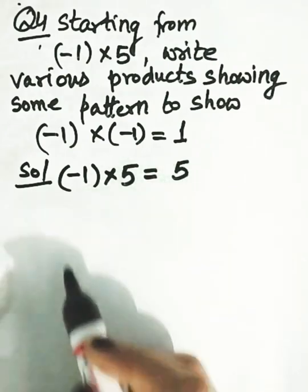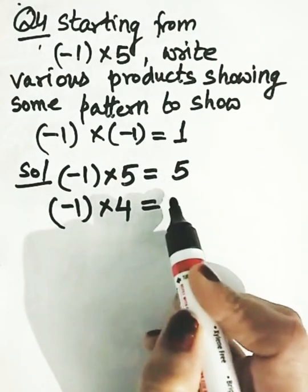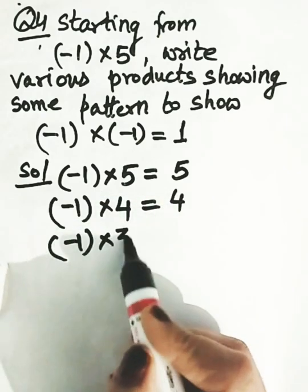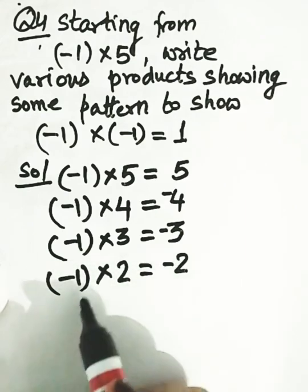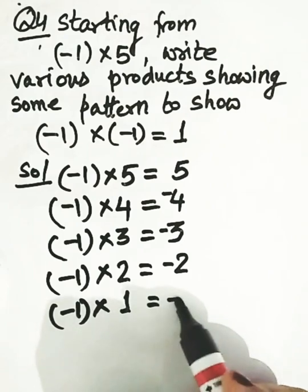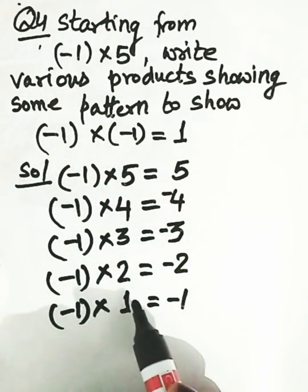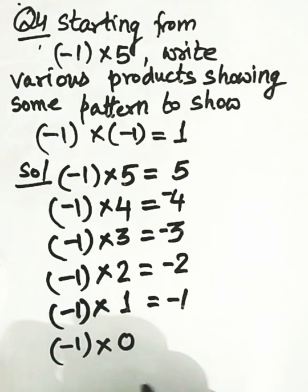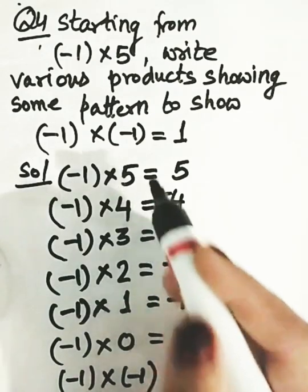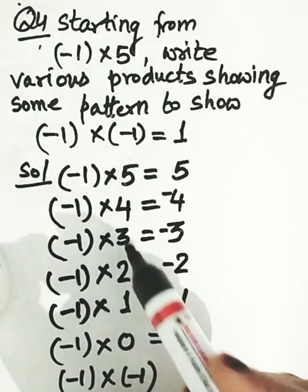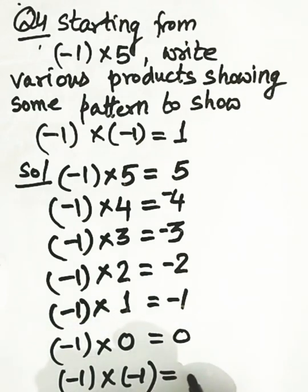Starting from minus 1 into 5, which gives minus 5. Then minus 1 multiplied by 4 gives minus 4. Minus 1 multiplied by 3 gives minus 3. Minus 1 multiplied by 2 gives minus 2. Minus 1 multiplied by 1 gives minus 1. We need to go up to minus 1. After 1 comes 0, so minus 1 into 0 gives 0. Then minus 1 into minus 1 gives positive 1.